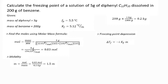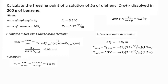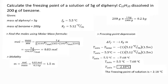Now, delta T equals the freezing point of the solution minus the freezing point of benzene (5.5°C), which equals negative i (1) multiplied by K_f (5.12°C/m) multiplied by molality (1.5 m), giving negative 7.68°C. So the freezing point of solution minus 5.5°C equals negative 7.68°C. Therefore the freezing point of the solution equals 5.5 minus 7.68, which is negative 2.18 degrees Celsius.